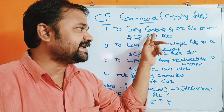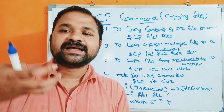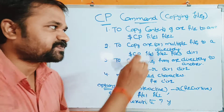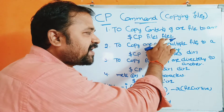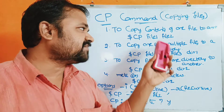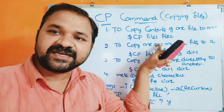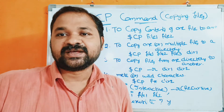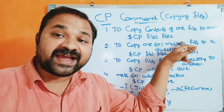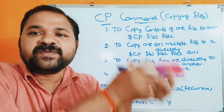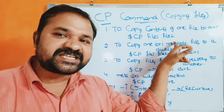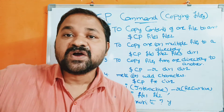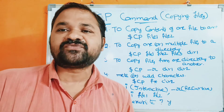The first advantage of the cp command is it is useful to copy the contents of one file to another file. The syntax is: cp file1 file2, where file1 is the source file name and file2 is the destination file name. When this statement is executed, the contents of the source file will be copied to the destination file. If the destination file doesn't exist, a new file will be created with the name file2. If file2 already exists, then its contents will be overwritten.